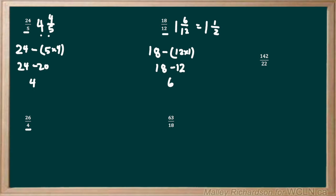Moving on to the next question, we have to see how many times does 4 go into 26 evenly. 4 goes into 26 six times, so 6 is going to be our coefficient of our mixed number. Next we're going to need a fraction beside our mixed number, and the fraction always has the same denominator as the original, so the denominator is going to be 4.